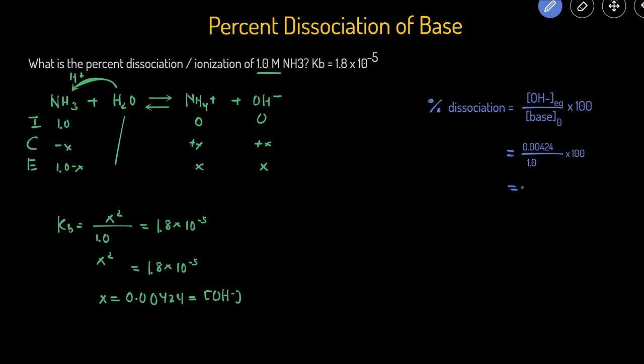And that will give us 0.424%. That means that only 0.4% of the ammonia will dissociate. And that's how you calculate the percent dissociation or the percent ionization of a base.